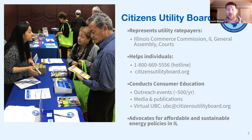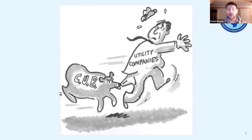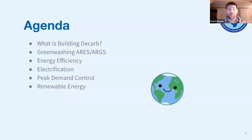We also do it virtually — there's an email address to set that up. Bottom line: we're advocates for affordable, reliable, and sustainable energy policies in Illinois. We're the small non-profit biting at the heels of the big utility companies. We've had some extreme successes, and today we're really going to focus on decarbonization — specifically building decarb, energy efficiency, electrification, peak demand control, and renewable energy.